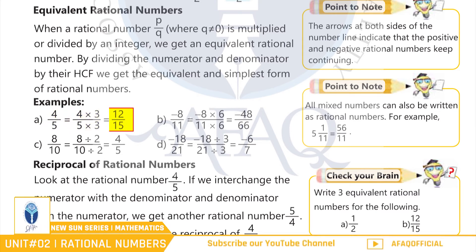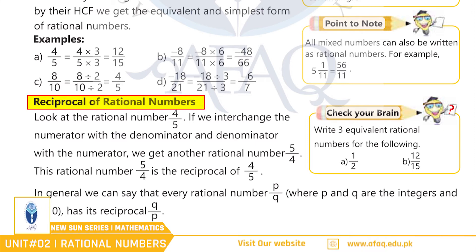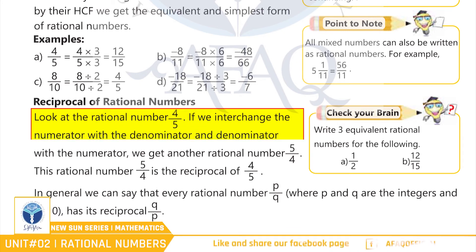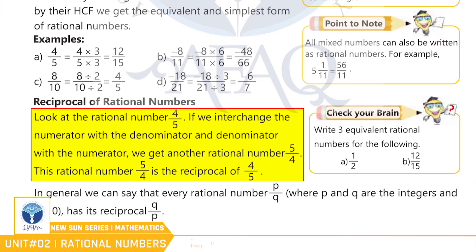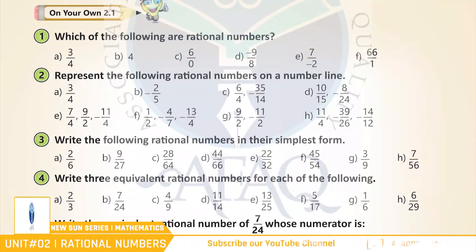Reciprocal of rational numbers, page 22. If we have a rational number 4 by 5, we interchange the numerator and denominator, so we will have 5 by 4. This 5 by 4 is the reciprocal of 4 by 5.